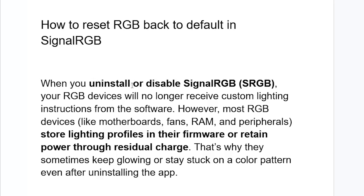When you uninstall or disable SignalRGB, your RGB devices will no longer receive custom lighting instructions from the software. However, most RGB devices like motherboards, fans, RAM, and peripherals store lighting profiles in their firmware or retain power through residual charge. That's why they sometimes keep glowing or stay stuck on a color pattern even after uninstalling the app.